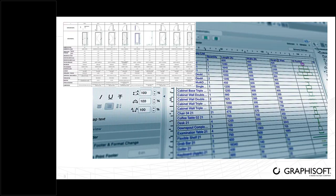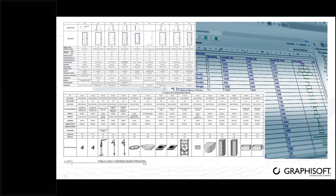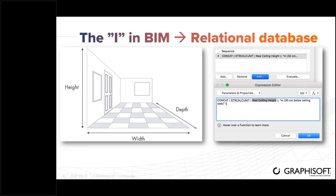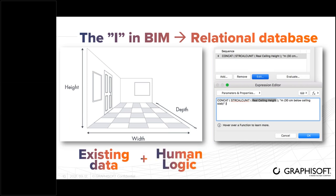Normally when you work with scheduling, you create door or window schedules, or even the fitting of objects in the BIM model. But what can we do more? The 'I' in BIM means Information — information is a set of data that came directly from the 3D model. Combining that data with human logic allows you to describe the building in 3D. This is exactly what you can do in ArchiCAD using expression-based properties — you can create a new database from the BIM database.